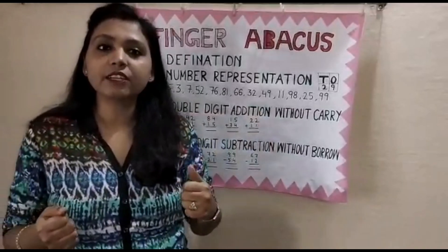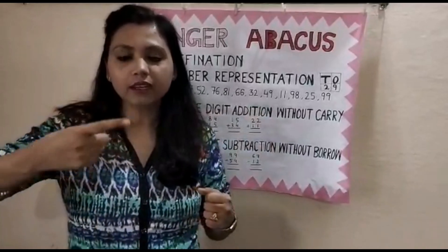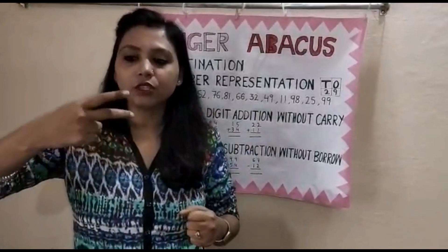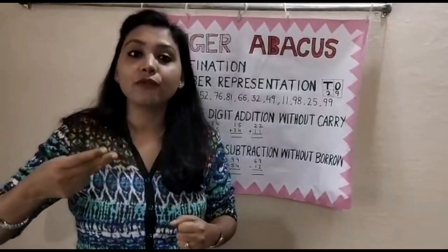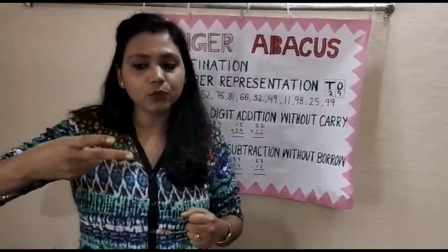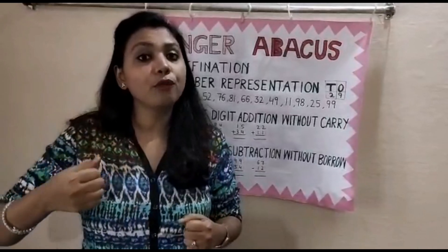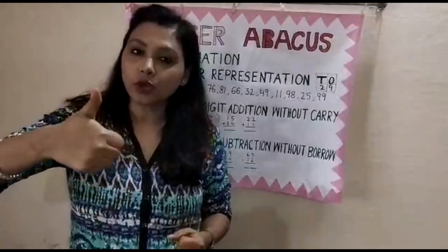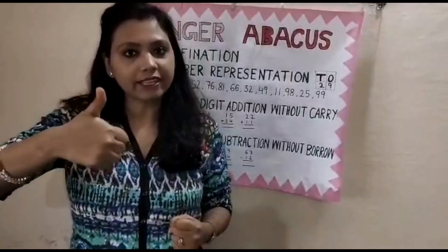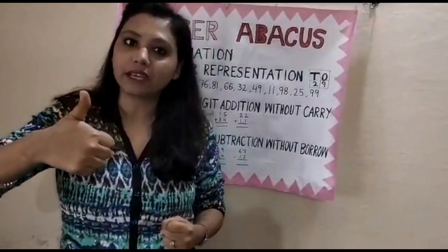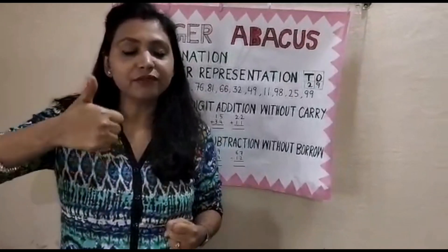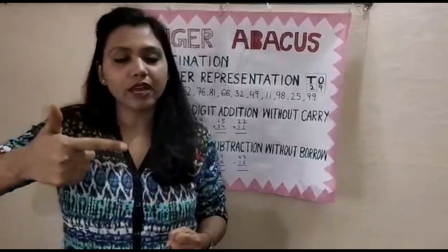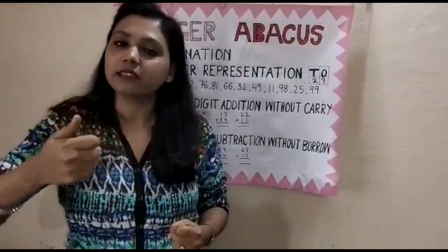So if we want to represent 2, that is 1, 2. For 5, the thumb has value 5 — so showing just the thumb gives 5. For 6, that is 5 plus 1. For 7, that is 5 plus 1 plus 1, which equals 7.